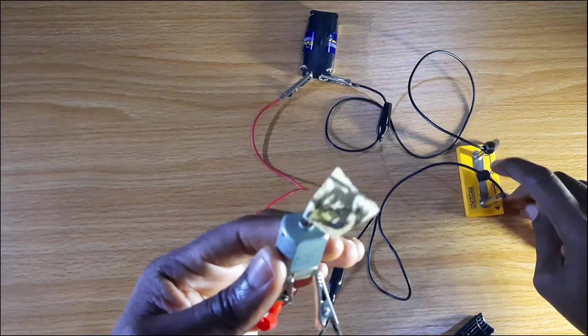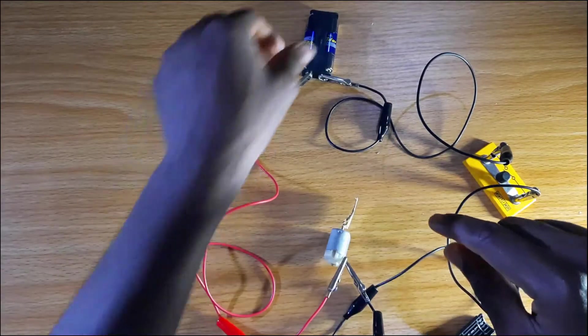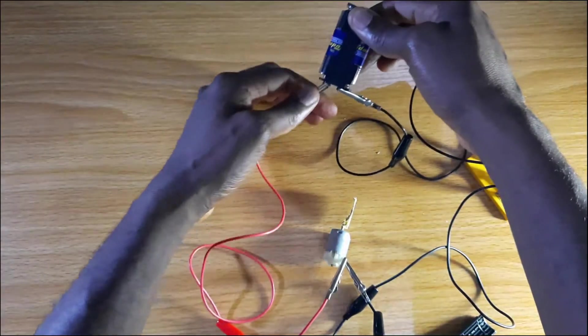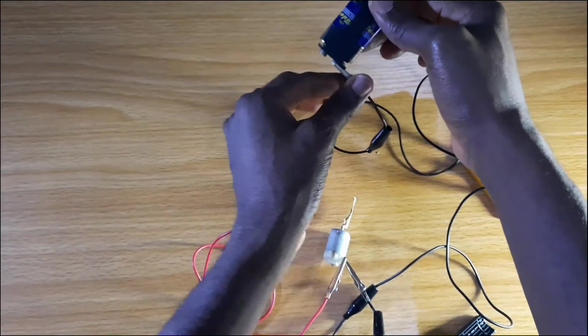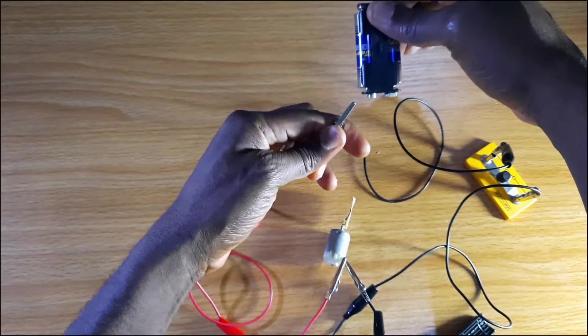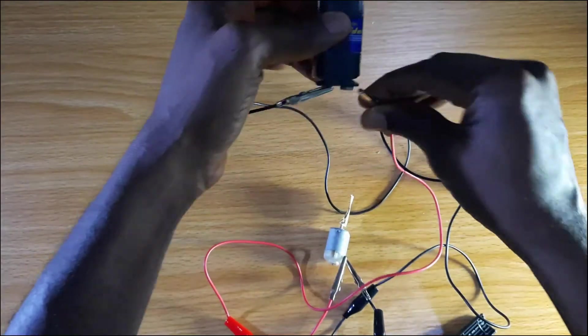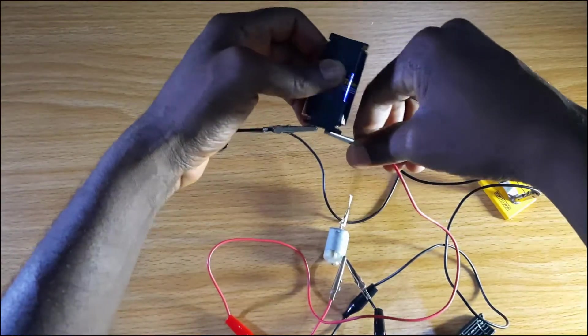So that's clockwise. Now let's try the opposite direction and see the effect on the direction of the motor. We're reversing the wires on the motor on the battery since we have two cells here.